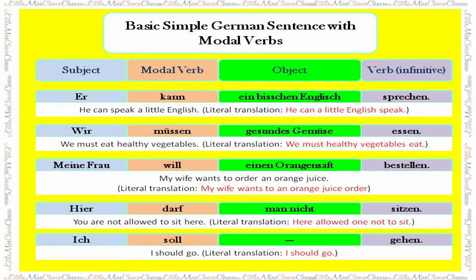In the first sentence, 'er kann ein bisschen Englisch sprechen', the modal verb 'kann' meaning 'can' is in the second position, and the main verb in its infinitive form 'sprechen' is at the end. This means 'he can speak a little bit of English'. 'Wir müssen gesundes Gemüse essen' means 'we must eat healthy vegetables'. 'Meine Frau will einen Orangensaft bestellen' means 'my wife wants to order an orange juice'. 'Hier darf man nicht sitzen' means 'you are not allowed to sit here', and 'ich soll gehen' means 'I should go'.